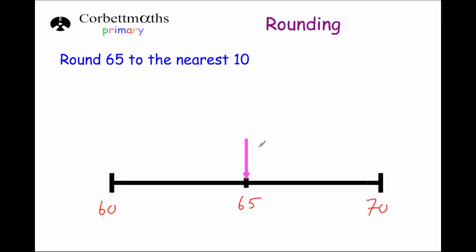So if we're rounding 15 to the nearest ten it would be 20. If we're rounding 95 to the nearest ten it would be 100. If we're rounding 25 to the nearest ten it would be 30. The rule is: if the number you're rounding is midway between the two multiples of ten — for example halfway between 60 and 70 — we always round up. So the answer for 65 would be 70.